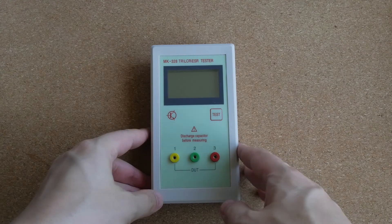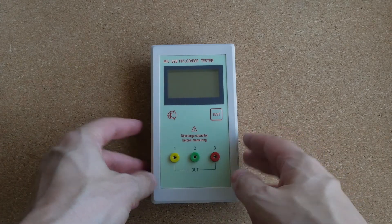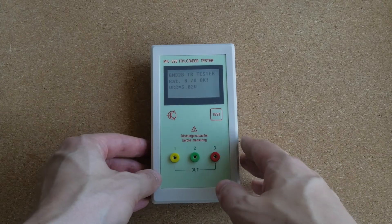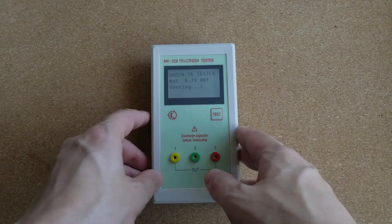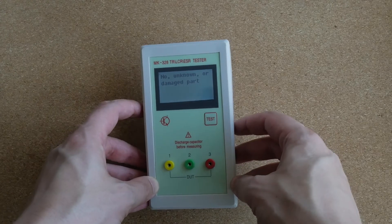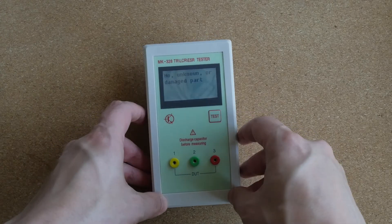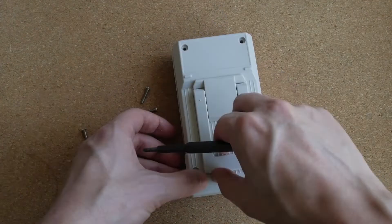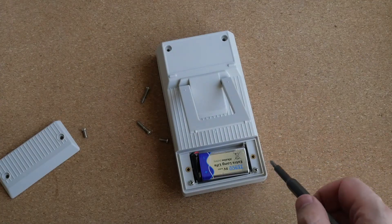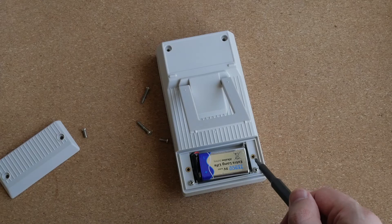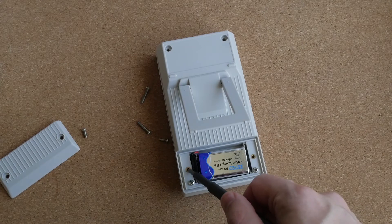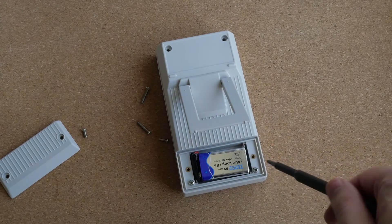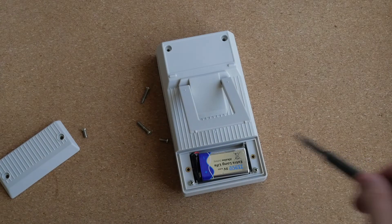Now let's disassemble the device. First of all it would be really interesting to see what is inside. Also you have probably noticed that the screen is a bit crooked inside the case. Maybe I will be able to straighten it out when I open it. Here is a nice surprise. There are metal inserts in the case and the screws basically go into the inserts and not into bare plastic.